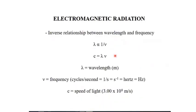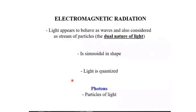The speed of light is the product of frequency and wavelength. Moving on, light has a dual nature: the first is its wave-like nature, which is sinusoidal in shape, and the second is its particle-like nature — light is quantifiable, and those particles of light are called photons. These are the two different features of light.